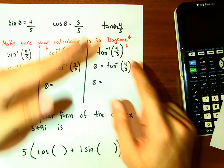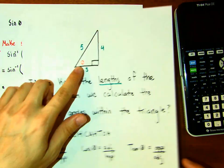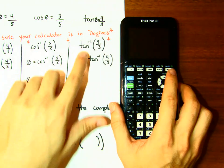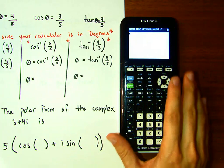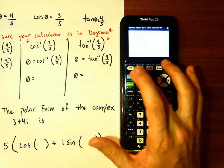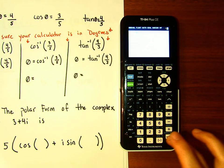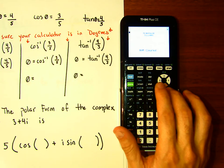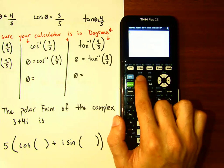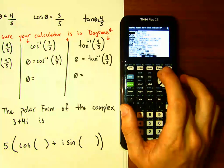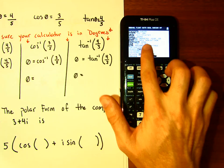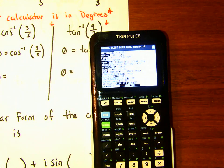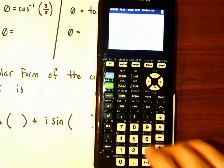So if we have these ratios, how do we find the angle? We can use the inverse functions of sine, cosine, and tangent. Grab your calculator, reset all RAM, go to mode, and change it to degree — right now it's probably in radian. Change it to degree and hit enter.